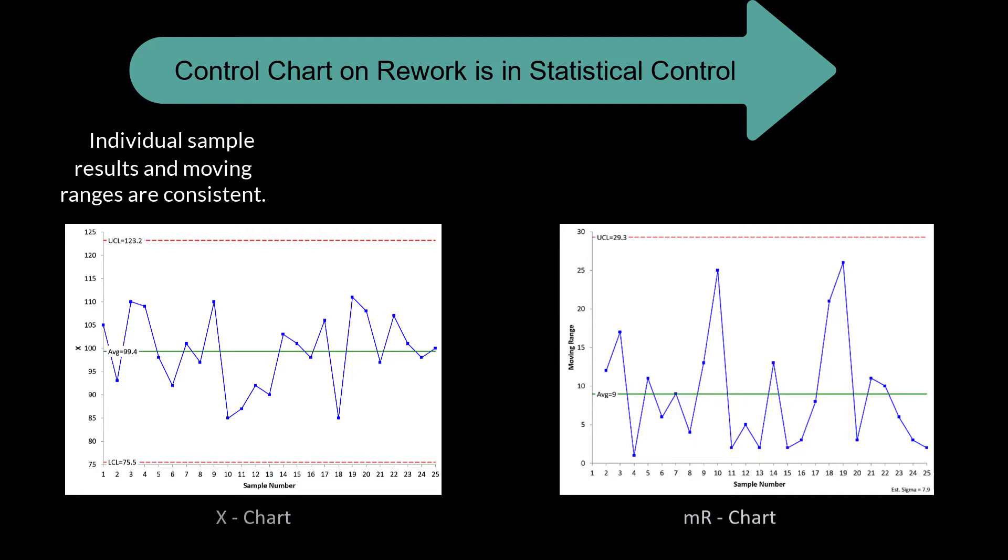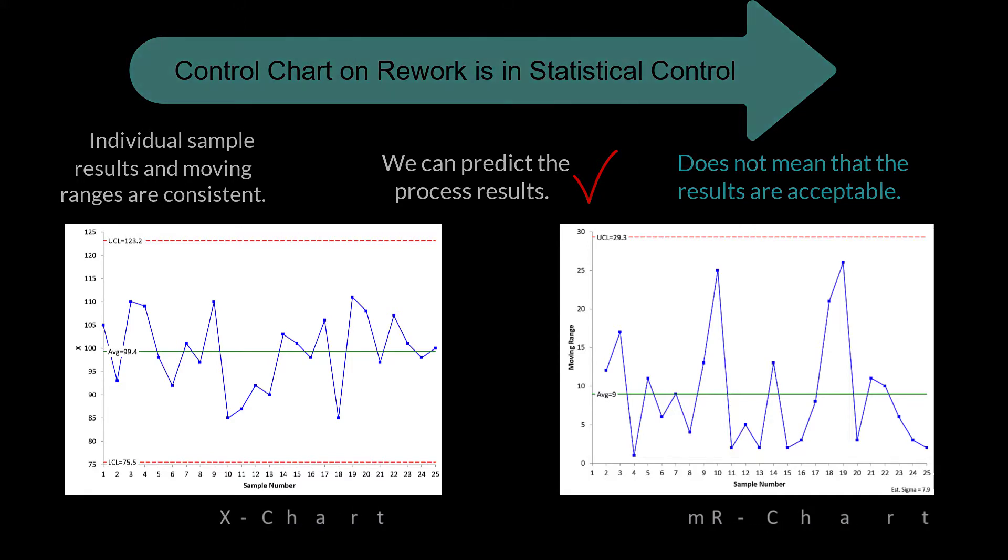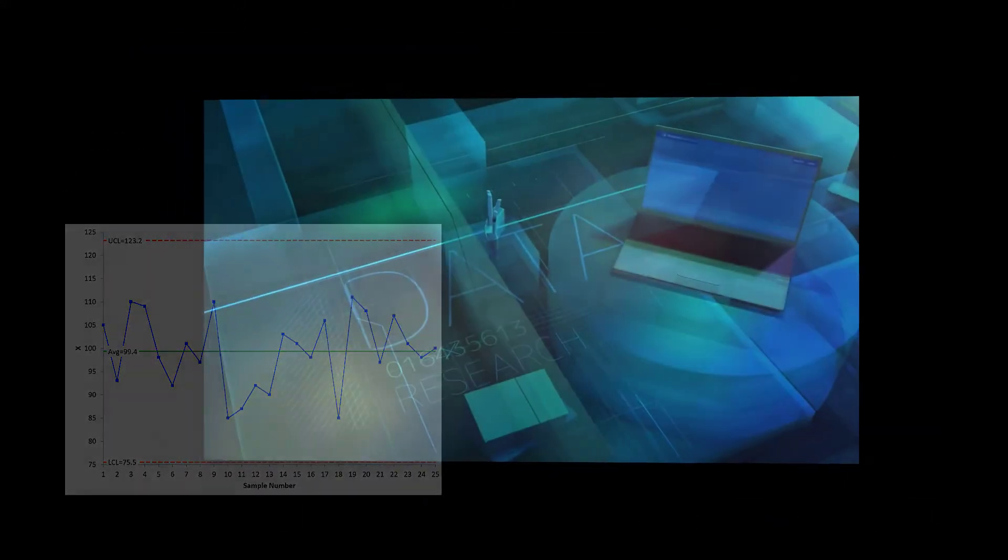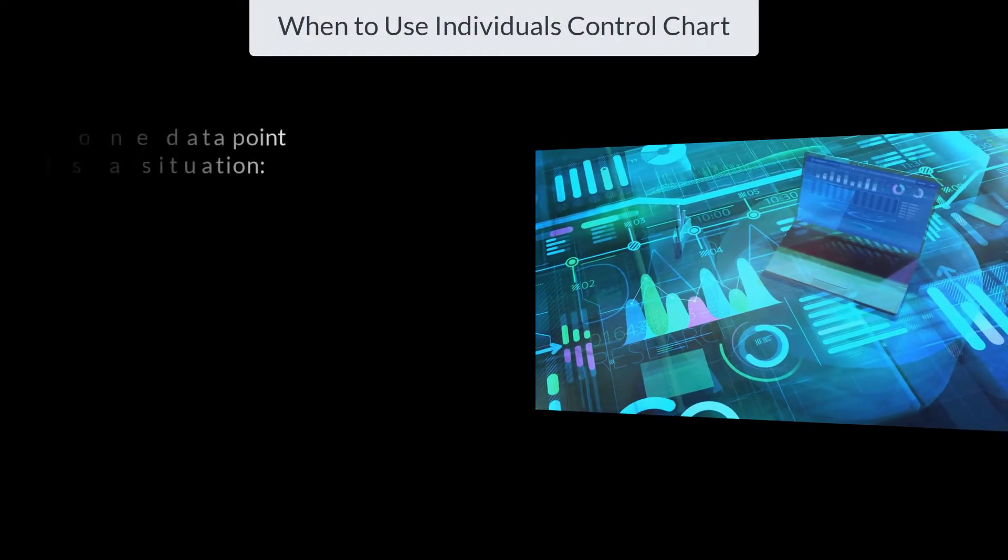With the X chart, all the tests apply: points beyond the control limit, zones, trends, over control. But with the moving range chart, only points beyond the limit. And these are in control. We can predict the results. Doesn't mean the results are acceptable. 100 hours of rework is not very acceptable per week. But again, you're going to use it when you only have one data point to represent a situation.